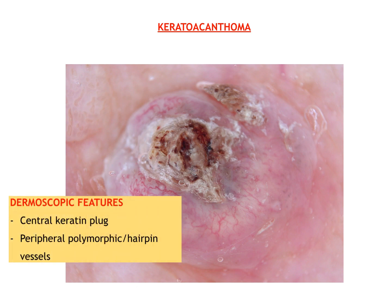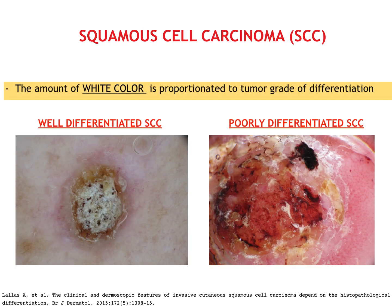Keratoacanthoma is considered a variant of squamous cell carcinoma for its histopathological analogy with well-differentiated invasive SCC. At dermoscopy, the central keratotic plug surrounded by polymorphic or hairpin vessels is its most common feature. The amount of white color at dermoscopy for SCC is thought to be predictive of tumor differentiation — the more white, the more differentiated.